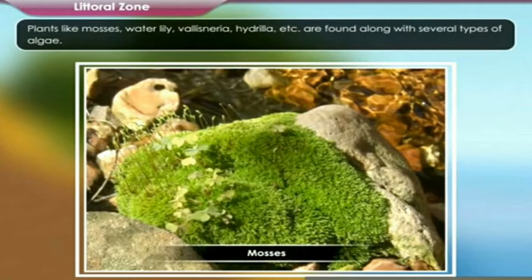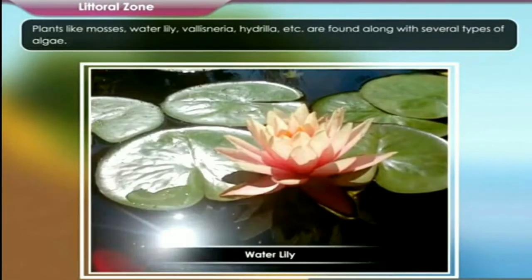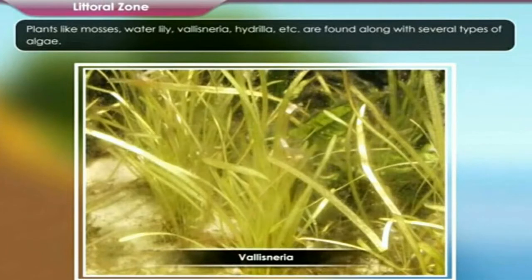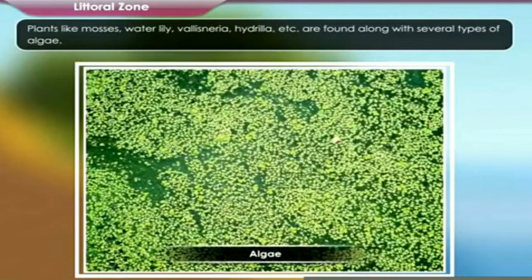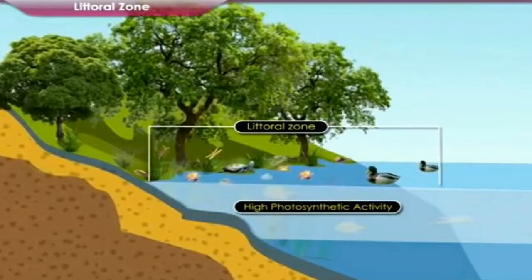These plants include mosses, the floating water lily, the emergent Vallisneria, and partially submerged Hydrilla plants, etc. Along with a variety of algae found here. High photosynthetic activity occurs in this zone.